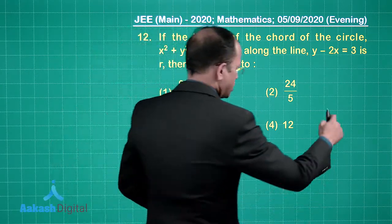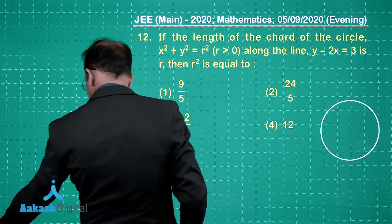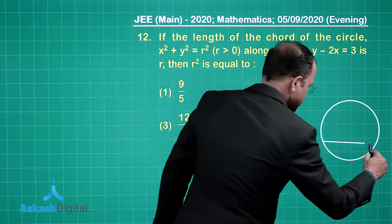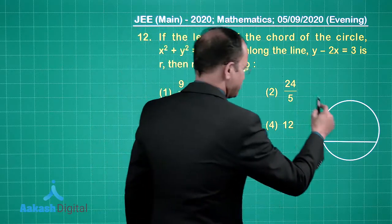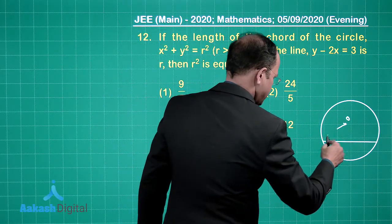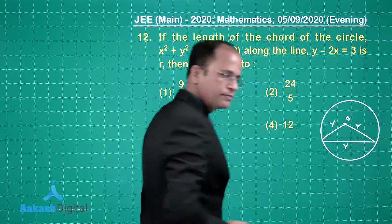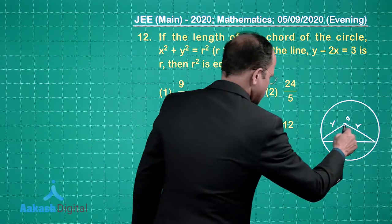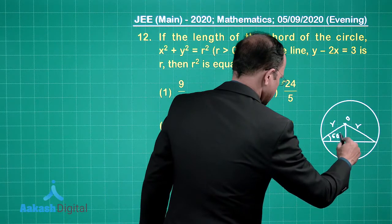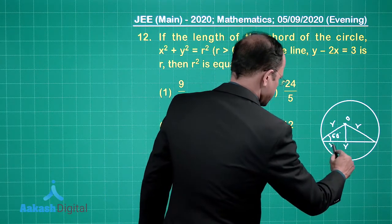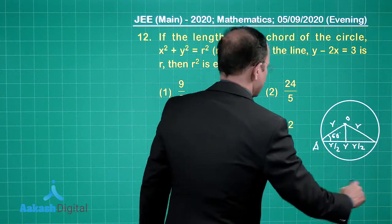Let us draw the circle with the chord. The length of the chord is r. Joining the centre to both endpoints of the chord also gives radius r each, forming an equilateral triangle. So the half-angle at the centre is 60°, and each half of the chord is r/2.